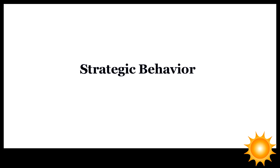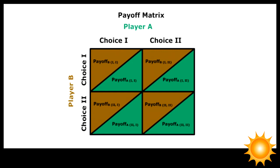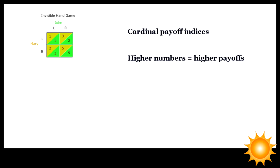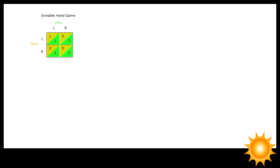Behavior to navigate such game-theoretic situations is called strategic. Strategic situations are commonly represented by a two-by-two payoff matrix. In the invisible hand situation, where group interest and self-interest are compatible, the matrix might look like this. There are two individuals, John and Mary, and two options: the right choice, R, and the left choice, L. The payoffs of John's choices are colored green, and the payoffs of Mary's choices are colored differently. The numbers are a cardinal index of possible payoffs, and there are four possible combinations of choices.